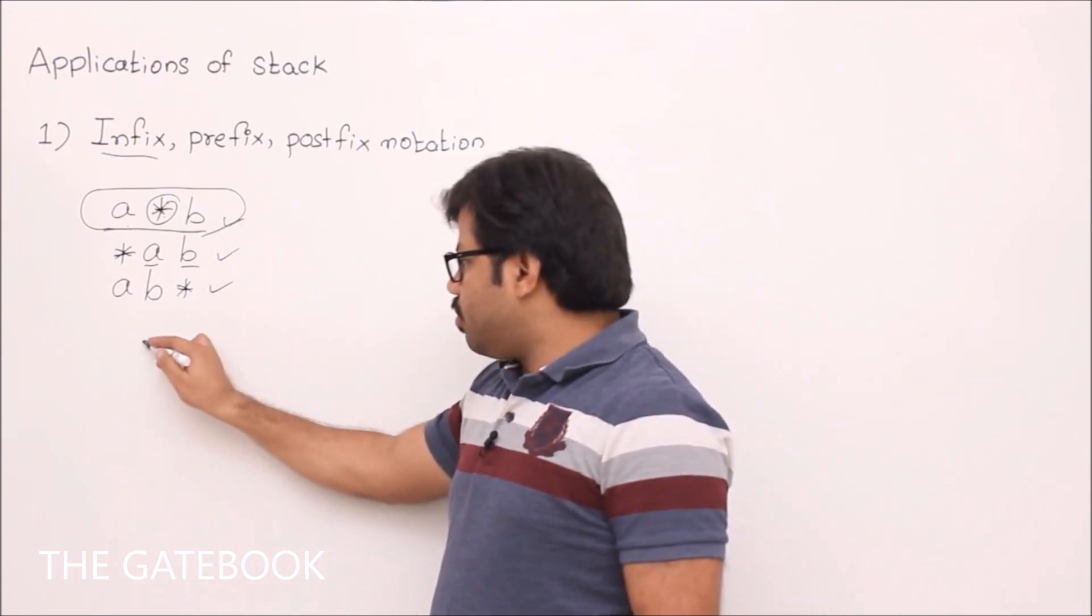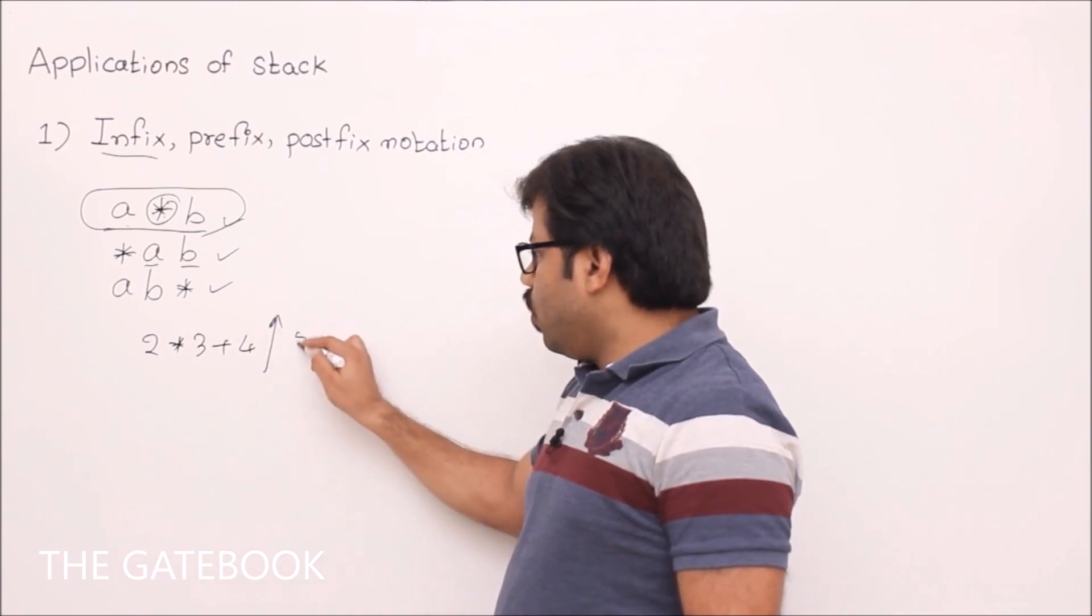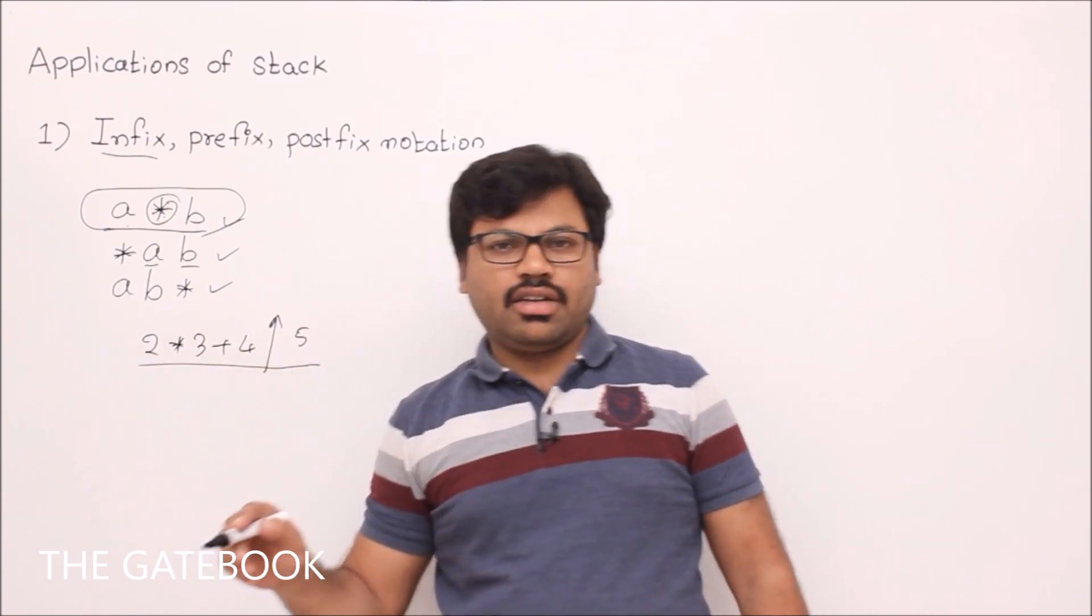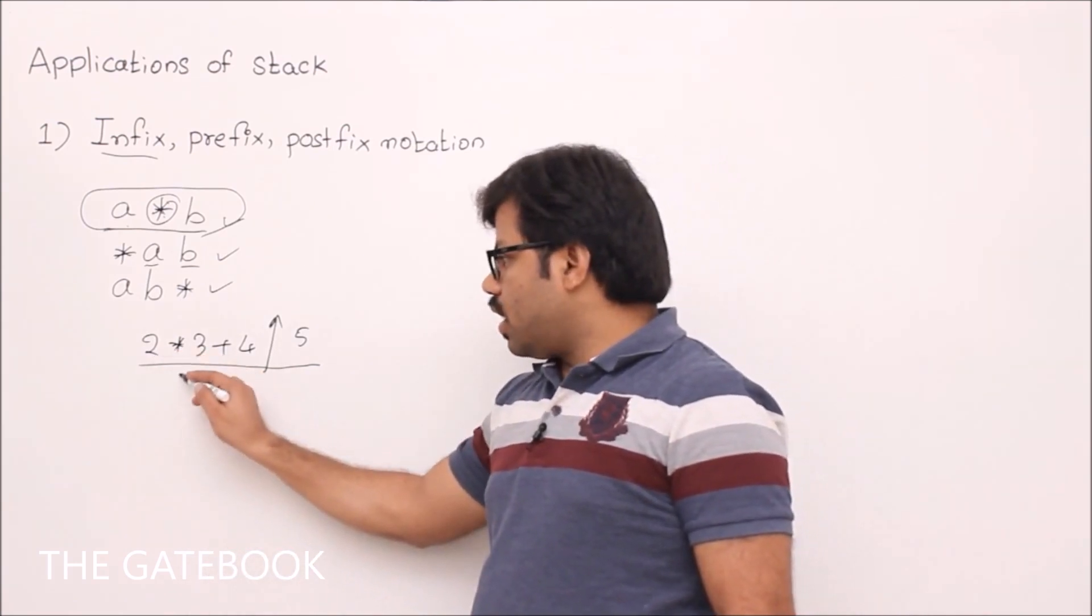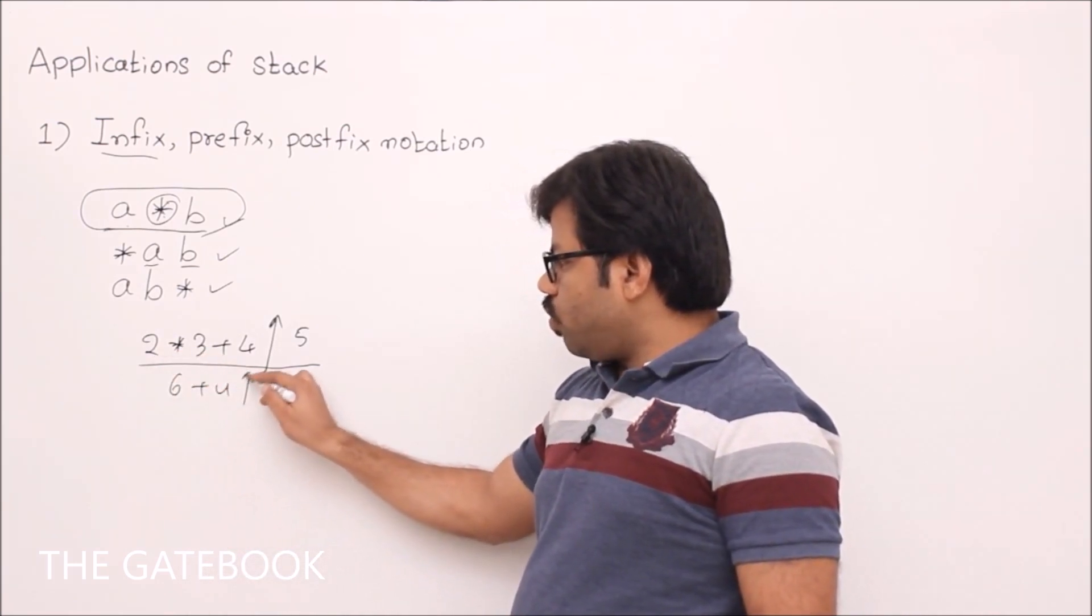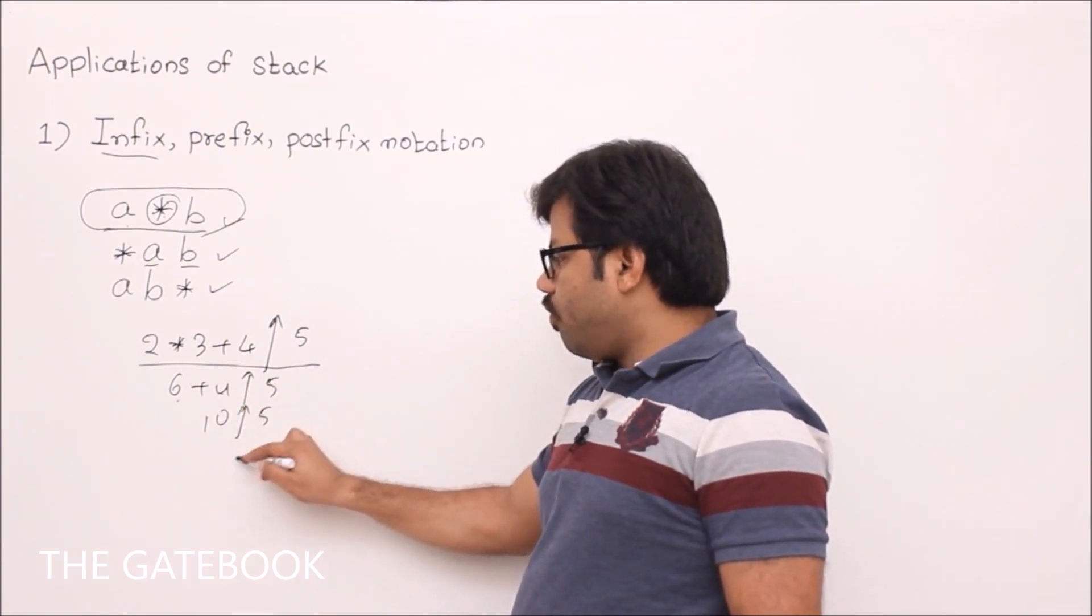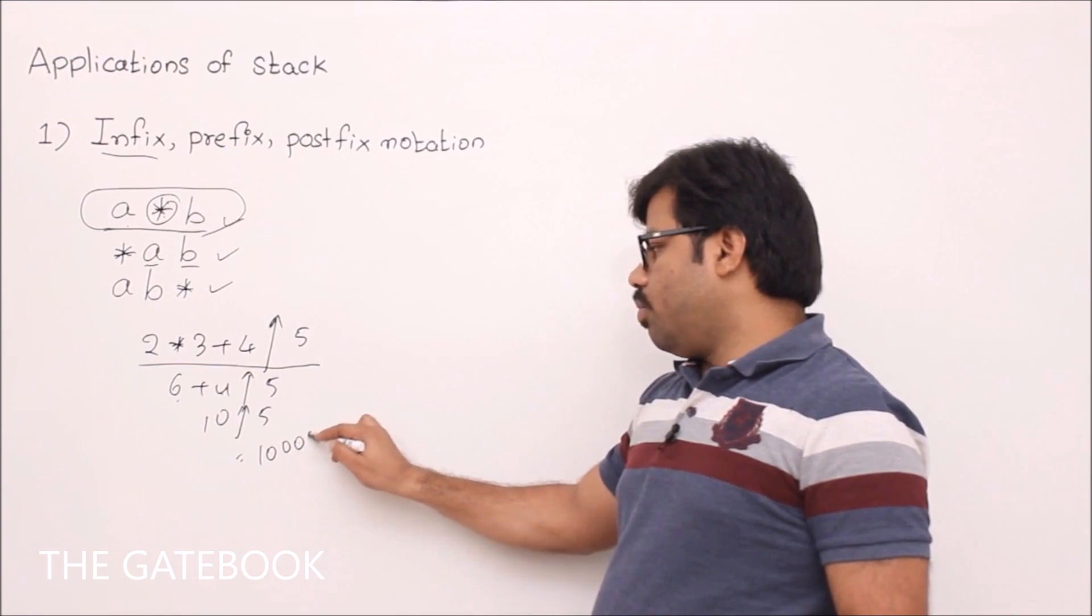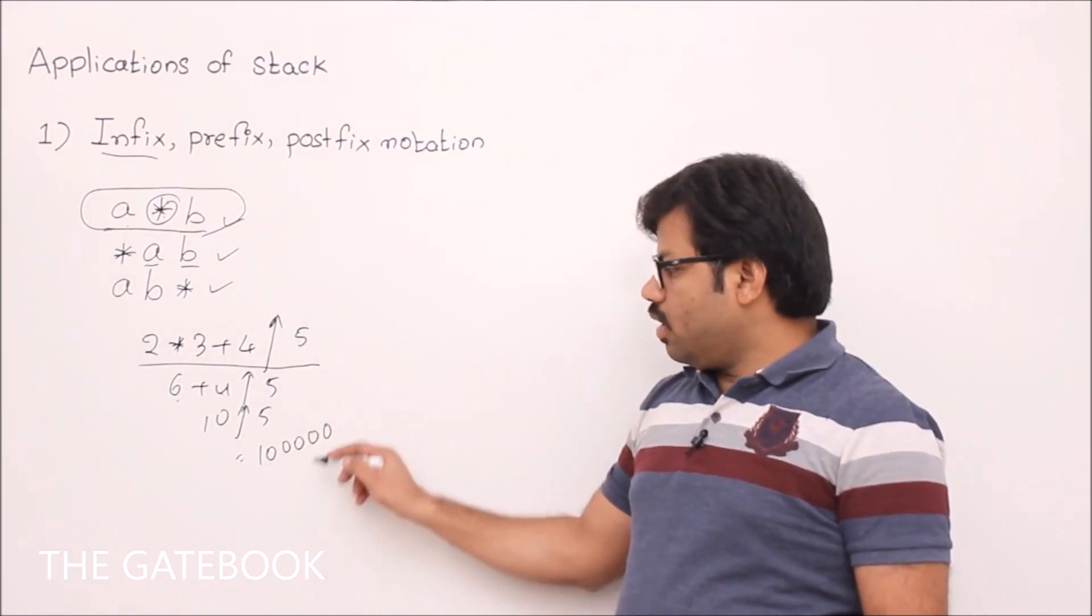The reason, consider this infix expression: 2 star 3 plus 4 power 5. To evaluate this expression, the machine should understand the priorities. It can't do directly like 2 star 3, 6 plus 4, 10, 10 cap 5, then 10 cap 5 is 10 followed by 4 zeros. Is this the right way?